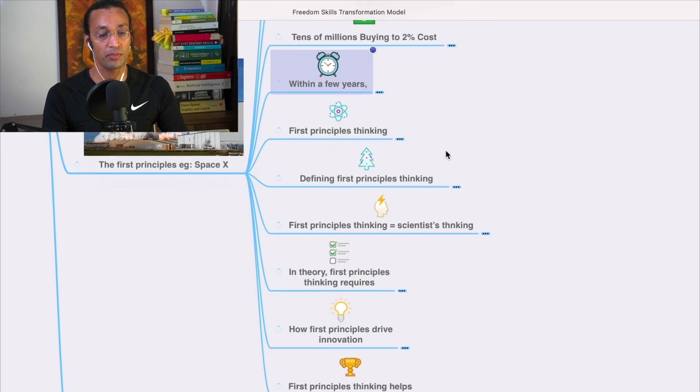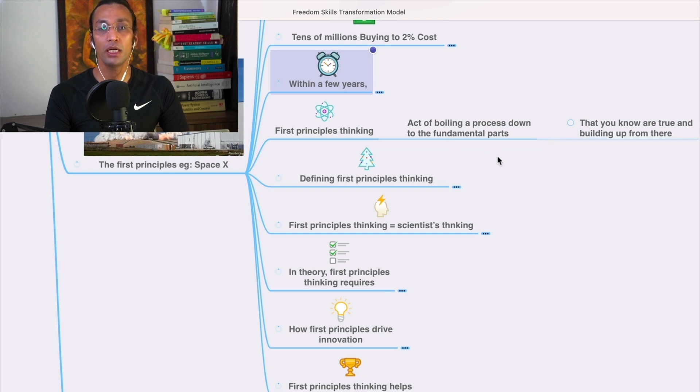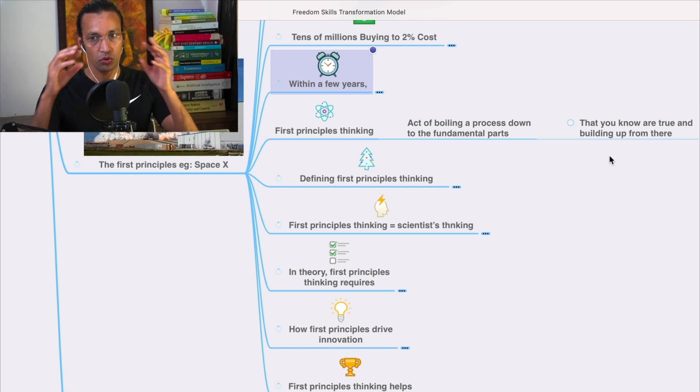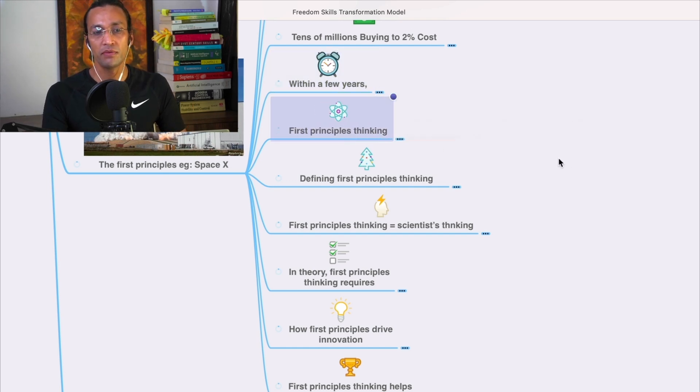First principles thinking is the act of boiling a process down to the fundamental parts that you know are true and building up from there. It's building from the truth in small units and coming up with innovative solutions.